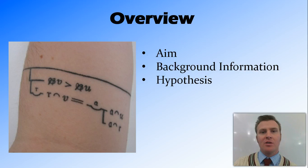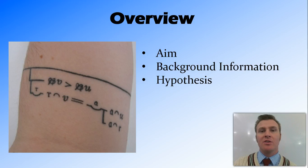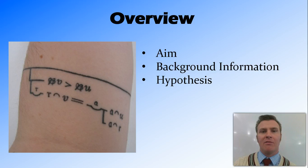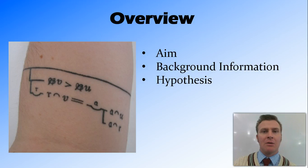In this video we've looked at the first part of the scientific report: the aim - what you're setting out to do, usually starting with 'to investigate' and a cause-and-effect relationship; background information - research on whether someone has done this before, and if not, something similar and how it differs; and then our hypothesis in the if-then format - if the independent variable affects the dependent variable, then increasing one will increase or decrease the other - some sort of directional prediction.